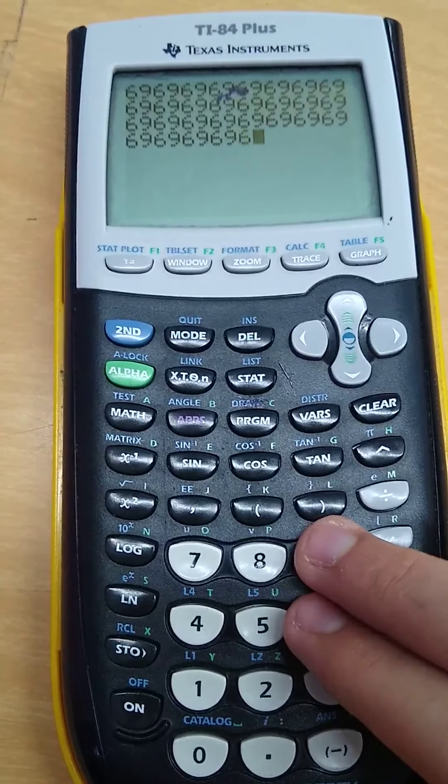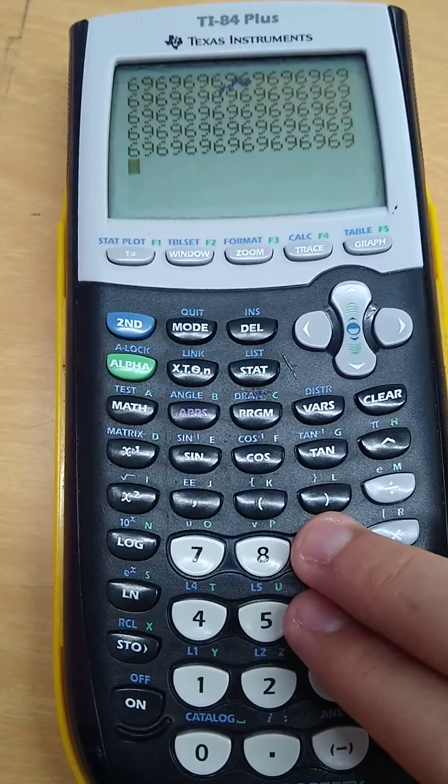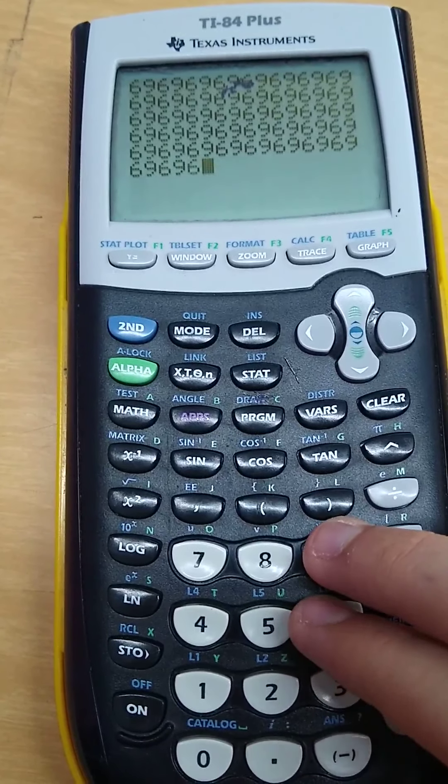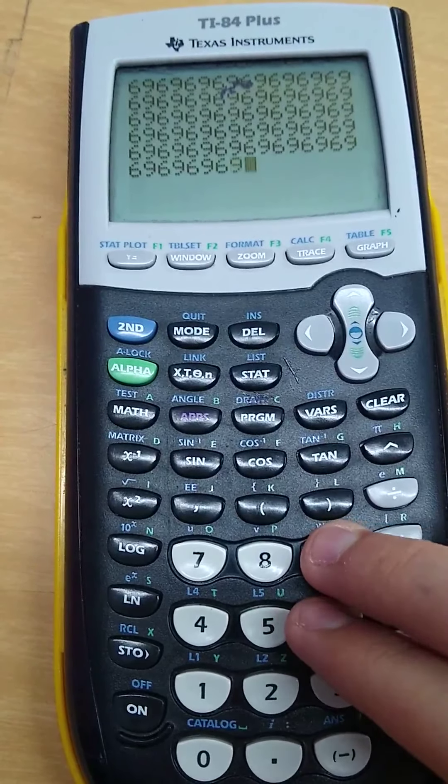Thirty-two, thirty-three, thirty-four, thirty-five, thirty-six, thirty-seven, thirty-eight, thirty-nine, forty, forty-one, forty-two, forty-three, forty-four, forty-five, forty-six.